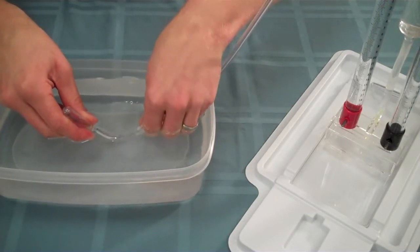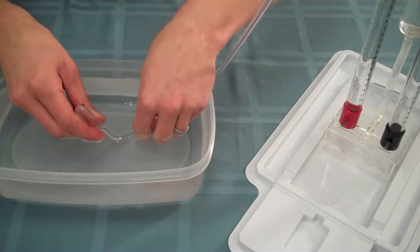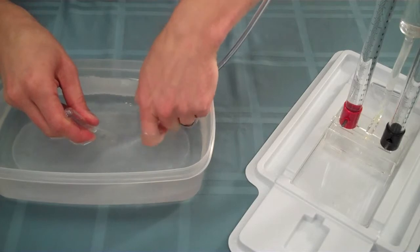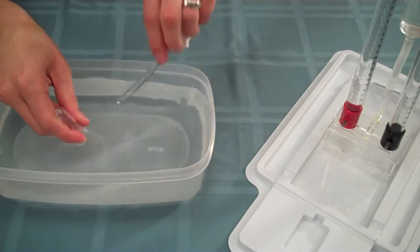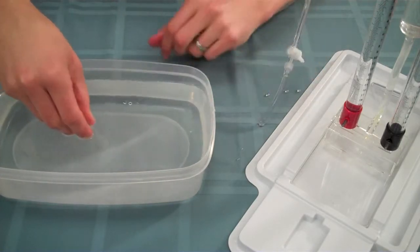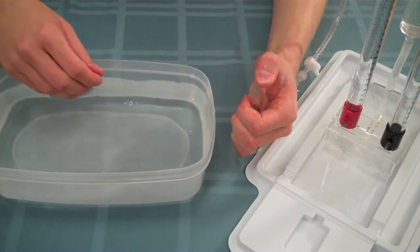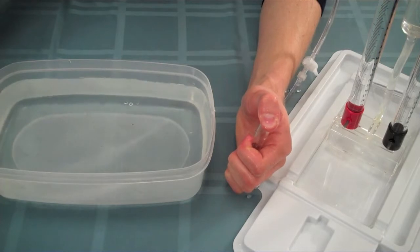Open the valve. You should see the gas displacing the water in the test tube. When most of the gas from the electrolyzer has entered the test tube, remove the tubing from the test tube and place your thumb over the opening of the test tube. Then, remove it from the basin of water and turn the test tube upright.